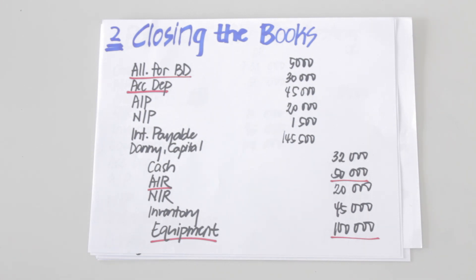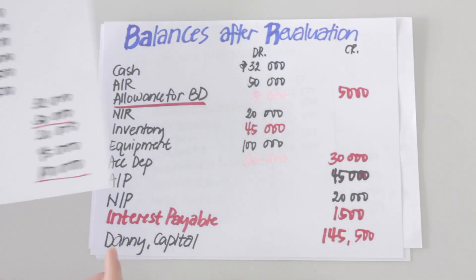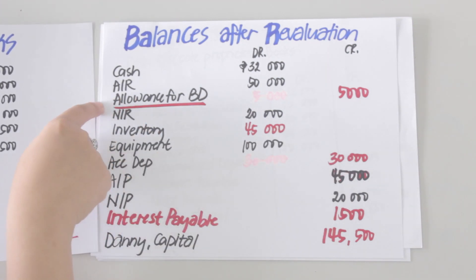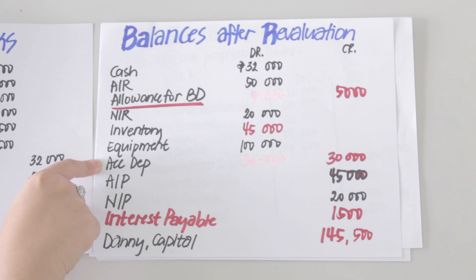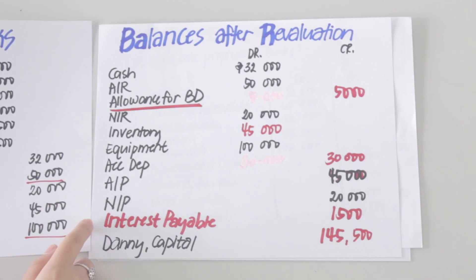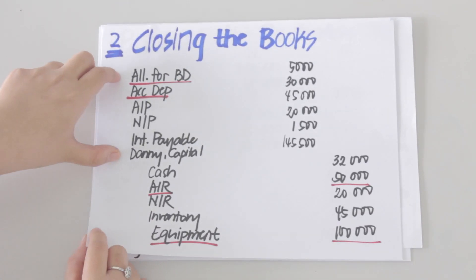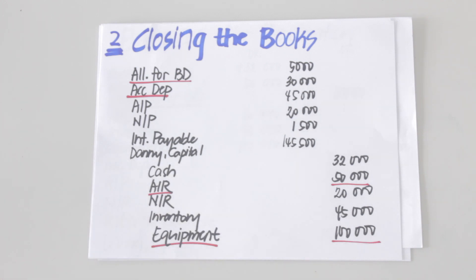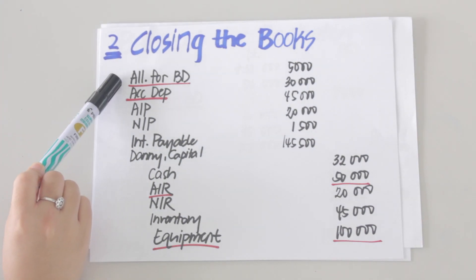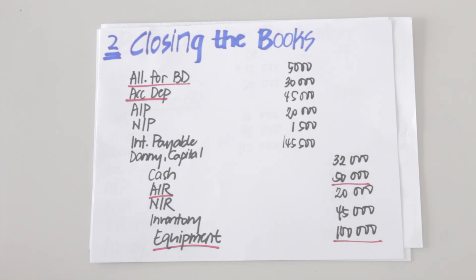After revaluing all assets and liabilities, the next step is to close the books of the sole proprietorship. To refresh your memory from ACBA 1: credit accounts with a normal debit balance, and debit those with a normal credit balance. So we debit allowance for bad debts, accumulated depreciation, accounts payable, notes payable, interest payable, and Danny capital — and credit all assets: cash, accounts receivable, notes receivable, inventory, and equipment. Take note of all accounts with a red underline, as we will compare these when opening the partnership books.